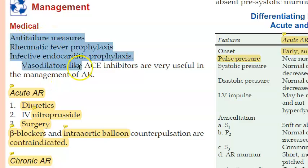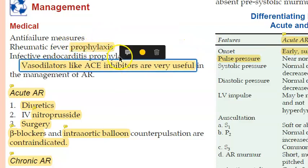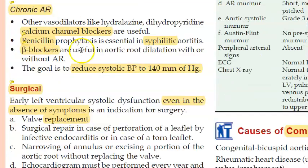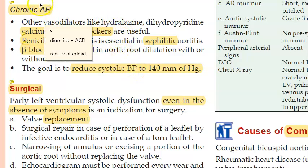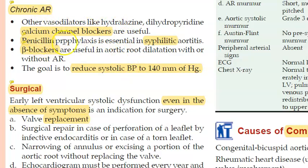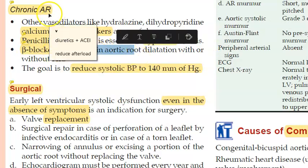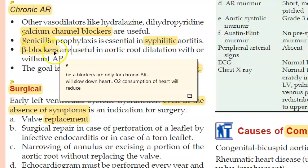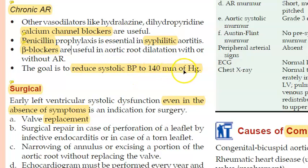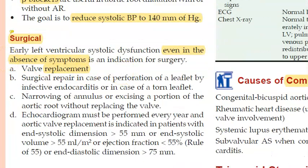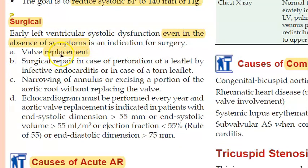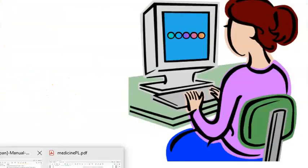For management of chronic aortic regurgitation, medically: ACE inhibitors are very useful, diuretics, calcium channel blockers, and penicillin as prophylaxis against syphilitic aortitis. Standard prophylaxis for rheumatic fever and infective endocarditis is given. Beta blockers are useful in chronic conditions but are contraindicated in acute AR. The aim is to reduce systolic blood pressure to 140 mmHg. Surgically, valve replacement is important — even if asymptomatic, early surgical treatment is recommended as late repair cannot be effectively managed.